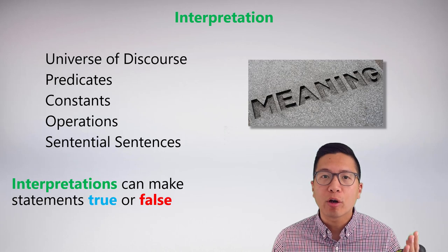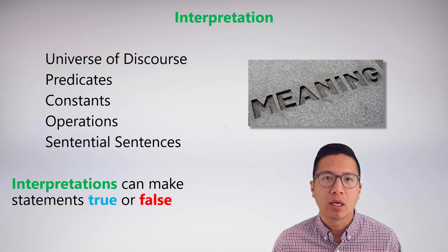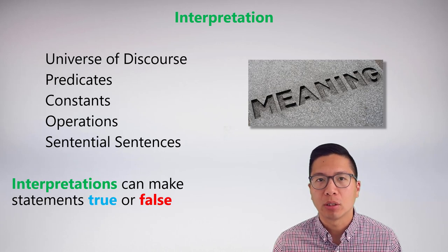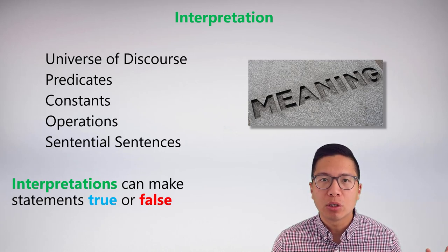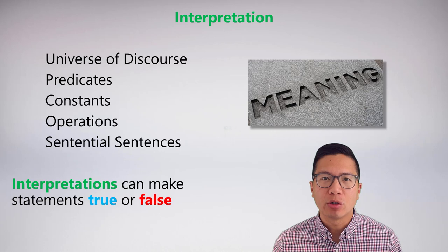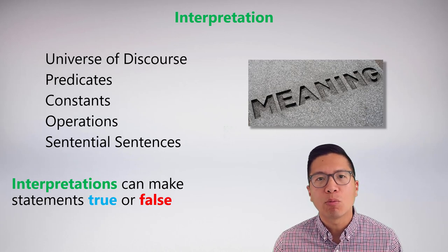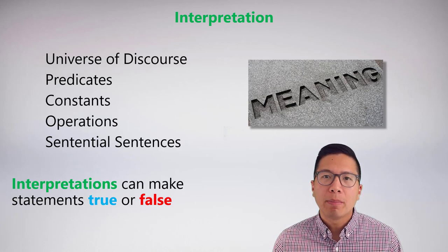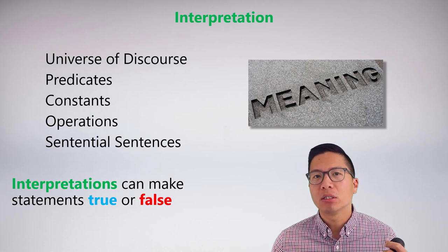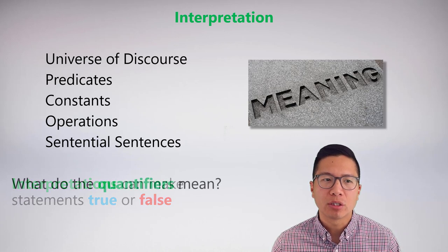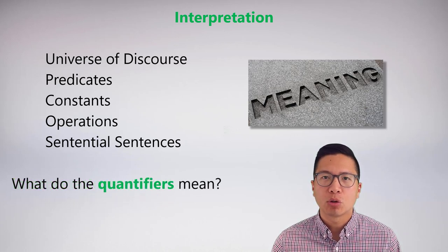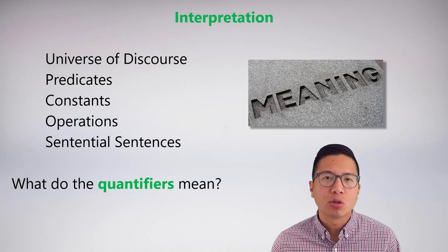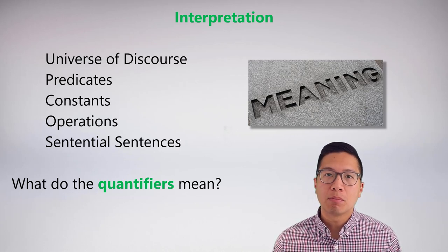We've seen how interpretations are very powerful tools in demonstrating certain semantic properties. When we do that, we're really constructing models. Models have been really useful in helping us understand what predicates mean and what the universe of discourse means, and have really clarified semantics in predicate logic for us. But there is one thing we still don't have a strong understanding of, which is: what do the quantifiers really mean?